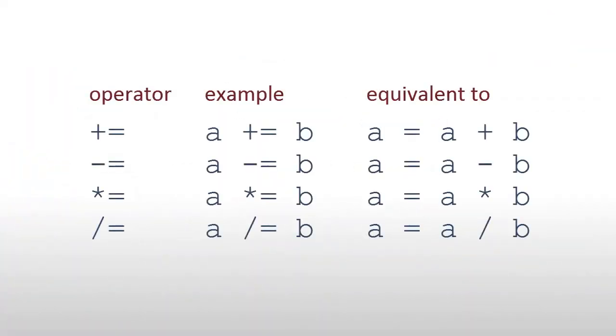These are some of the common compound assignment operators available in C. The operator itself is shown in the left column. Then there is an example showing how it might be used with variables called A and B. And in the right-hand column you can see how the same results could be achieved using non-compound operators. Let me explain these.